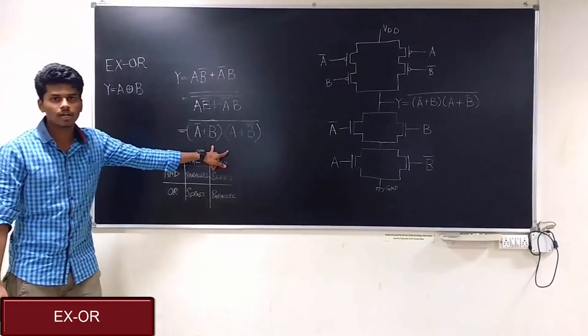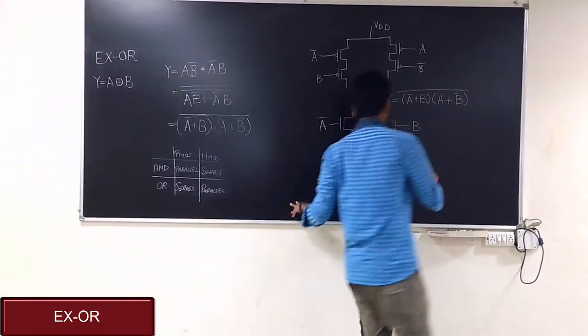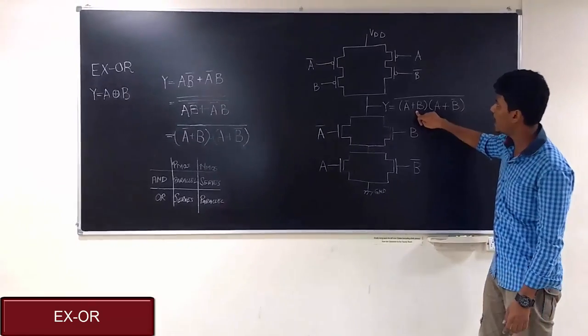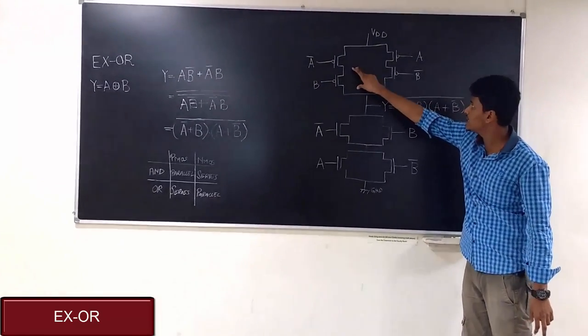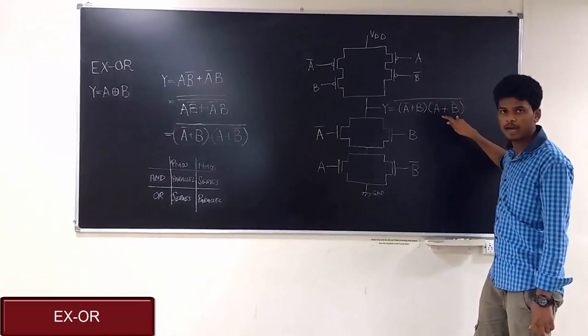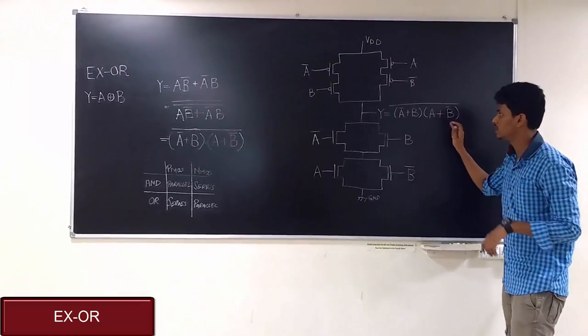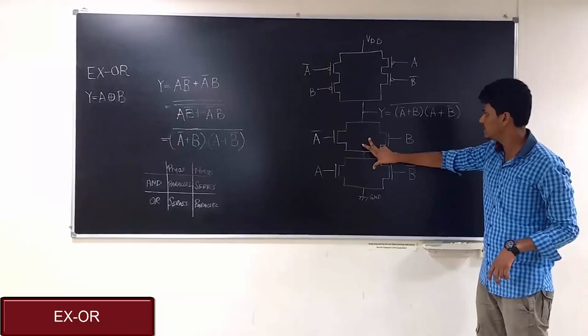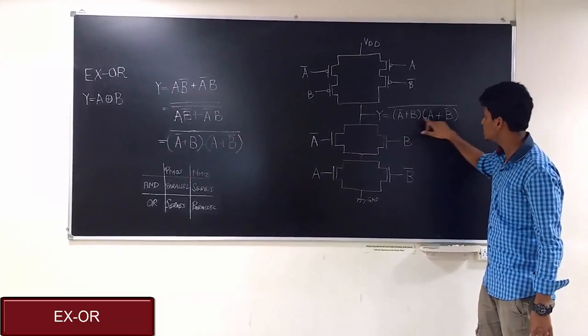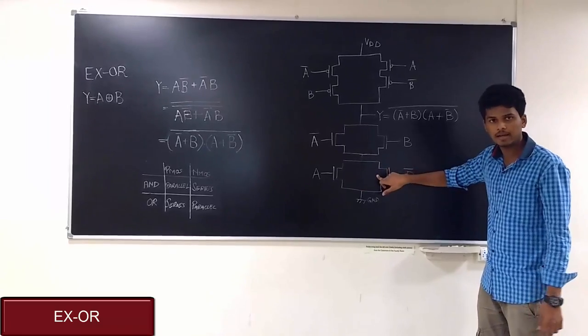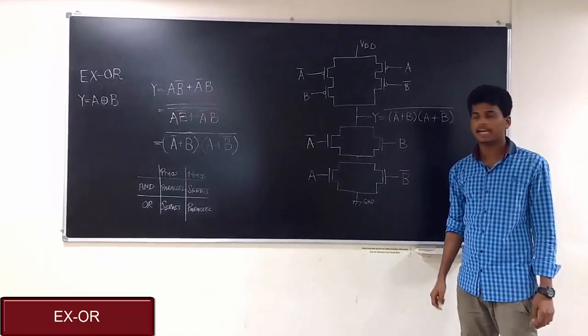Now let's look into the CMOS implementation. Here we can see that A and B bar are in series with each other which is in parallel with A and B bar according to that table of reference. In NMOS, we can see that A bar and B are in parallel with each other which is in series with A and B bar. Now let's look into the stick diagram of this.